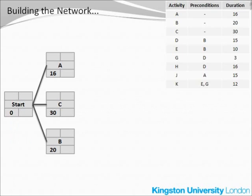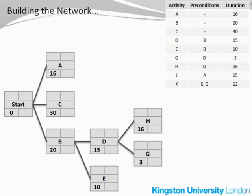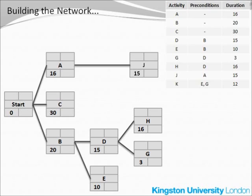Now we are ready to move on to activities D and E. According to the table, the precondition for both of them is activity B, so activities D and E will follow immediately after activity B. There is no activity F — the letter F is quite often omitted to avoid confusion with the letter E. Activities G and H both have precondition D, so they simply follow activity D. Activity J follows after A. Finally, activity K is a bit more complex because it has two preconditions, activity E and activity G.